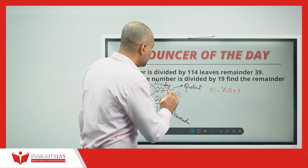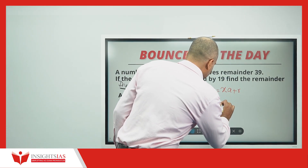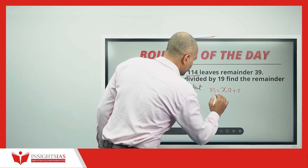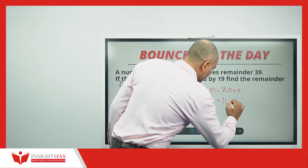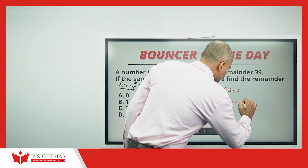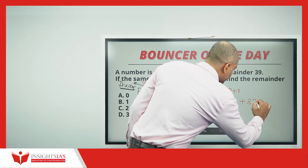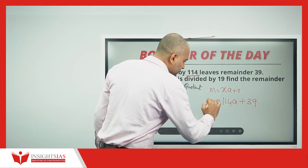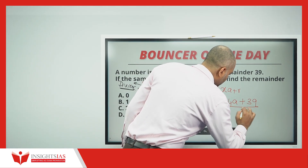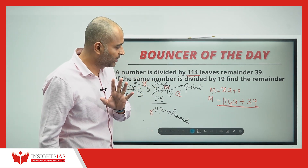Similarly, there is one number m which when divided by 114 — the divisor is 114 — a times, and the remainder is 39. So the number can be written as 114a + 39.